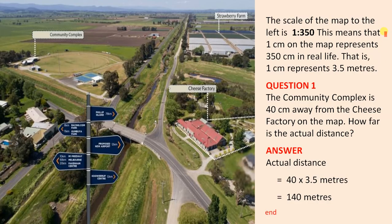The scale of the map to the left is 1 to 350. This means that 1 cm on the map represents 350 cm in real life. That is, 1 cm represents 3.5 m. So let's look at the question.